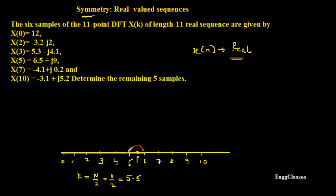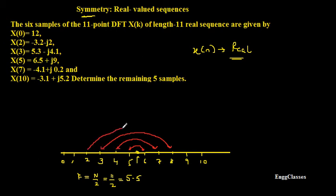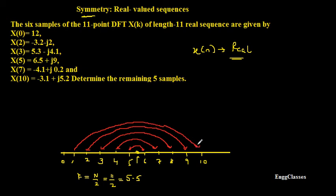Being symmetric about 5.5, the point to the left and the immediate point to the right are conjugate symmetric. So: X(5) is conjugate symmetric with X(6); X(4) with X(7); X(3) with X(8); X(2) with X(9); and X(1) with X(10).